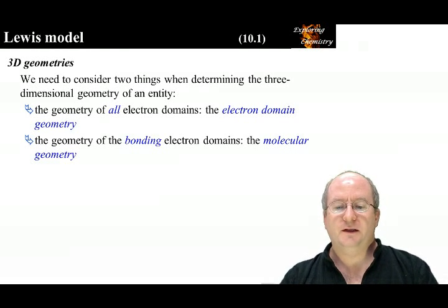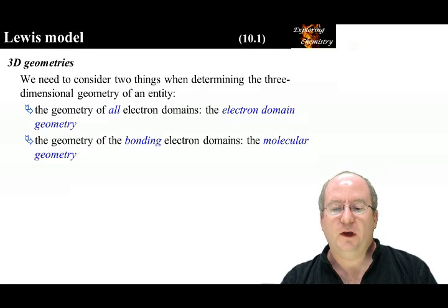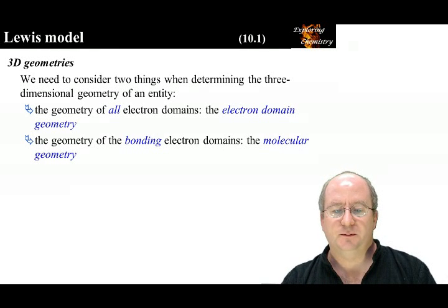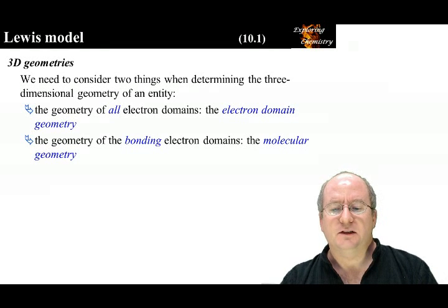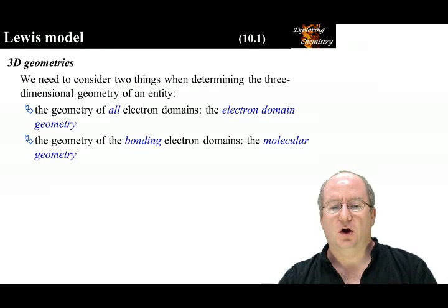When determining the 3D geometry, we need to consider first the geometry of all the electron domains, which is called the electron domain geometry. Second, the geometry of the bonding electron domains, which is called the molecular geometry.